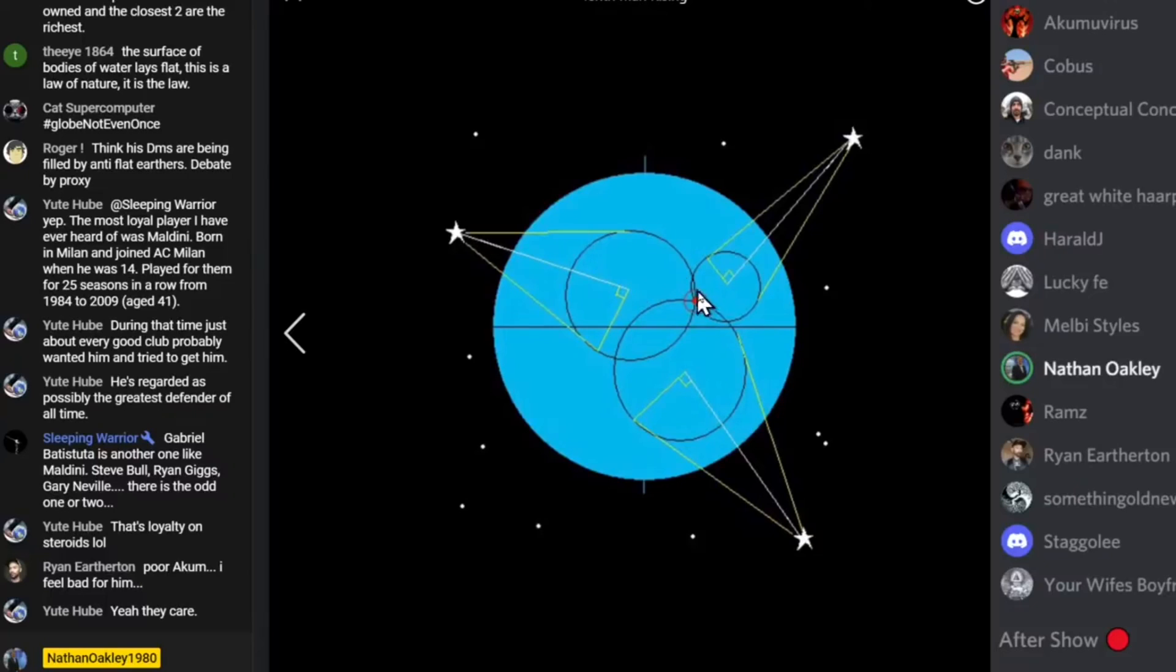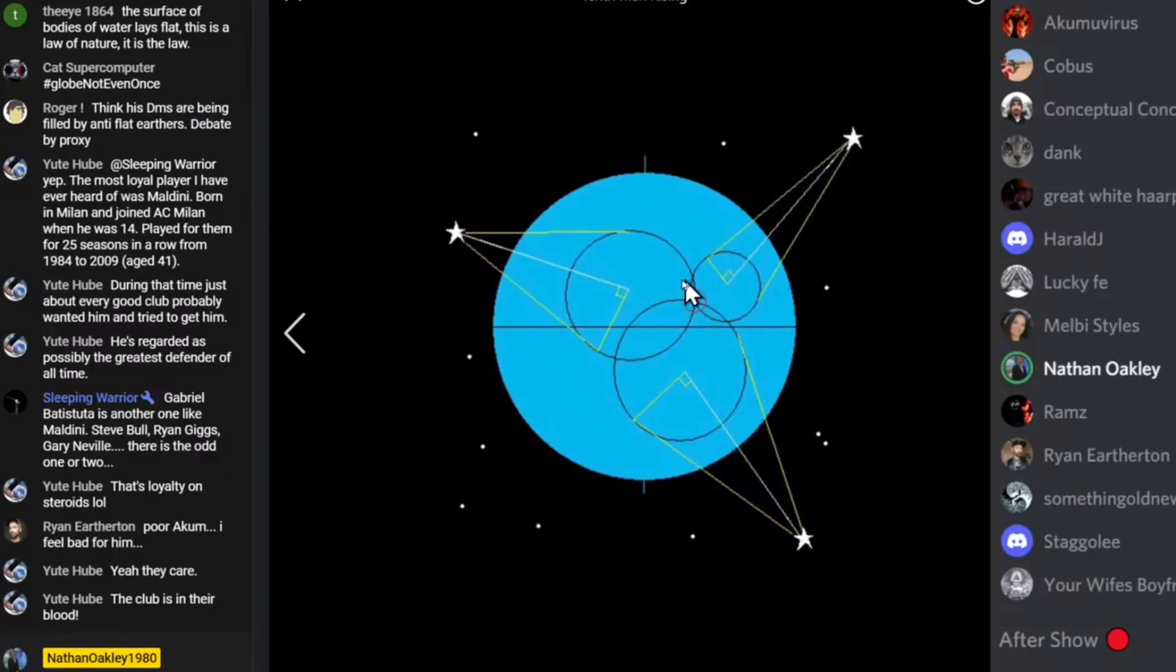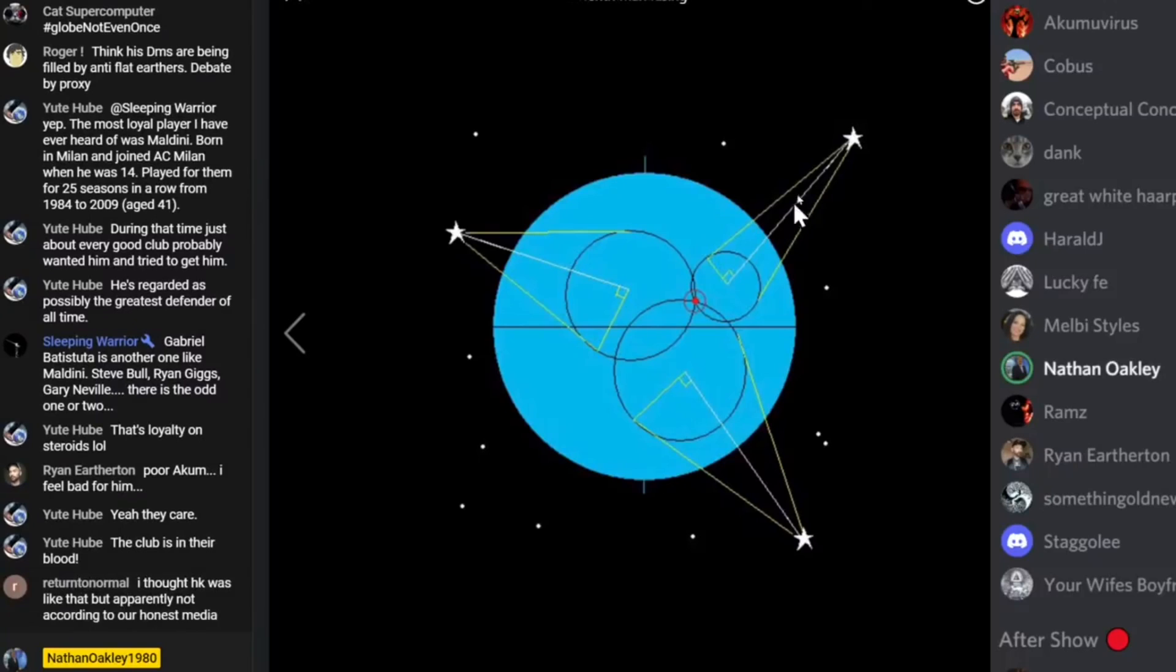This line from you to wherever the GP of the star is can't be falling away from you. Because if it's falling away from you eight inches per mile squared, it would put each of these different geographical positions on a different elevation in three-dimensional space and would no longer be capable of triangulating your position.